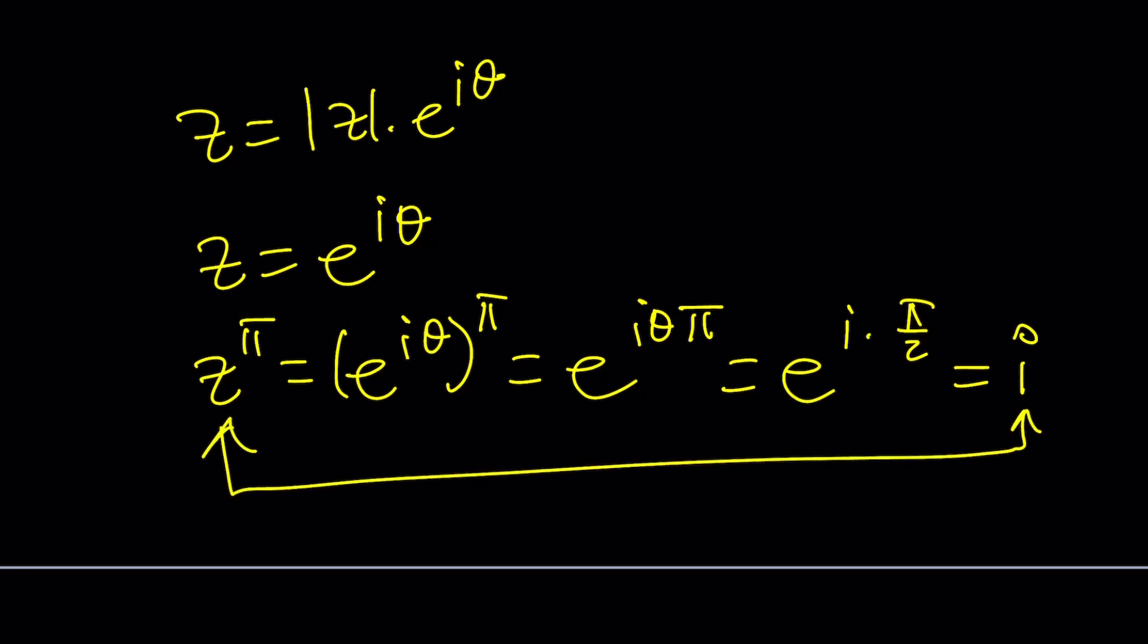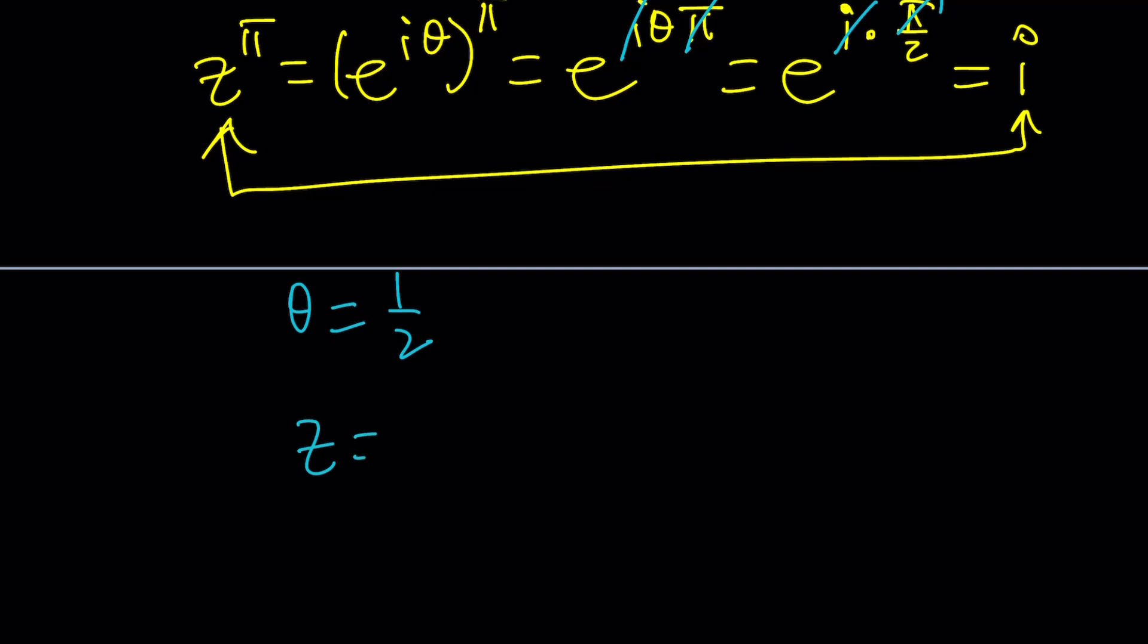Obviously, I just simplified it and took the principal branch for this. And from here, we can kind of cancel out the i's. And we get, we cancel out the π's, pretty much everything. And we end up with θ equals 1 half. And then z is e to the i θ. So it's going to be e to the i times 1 half.